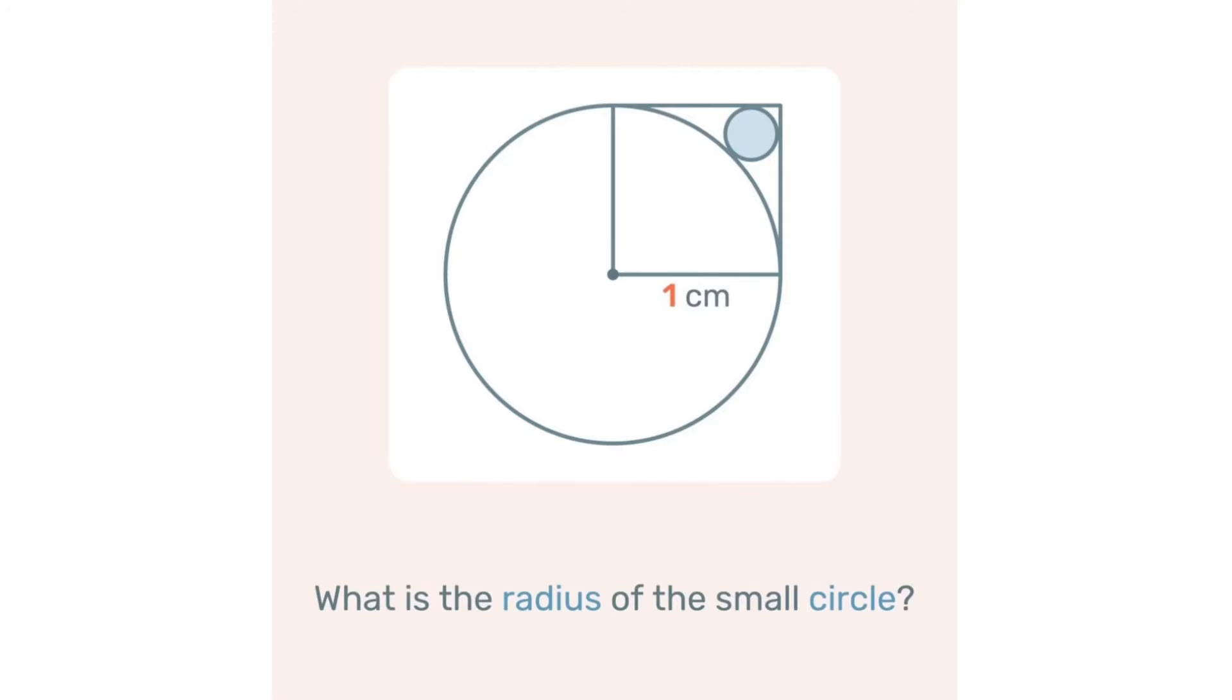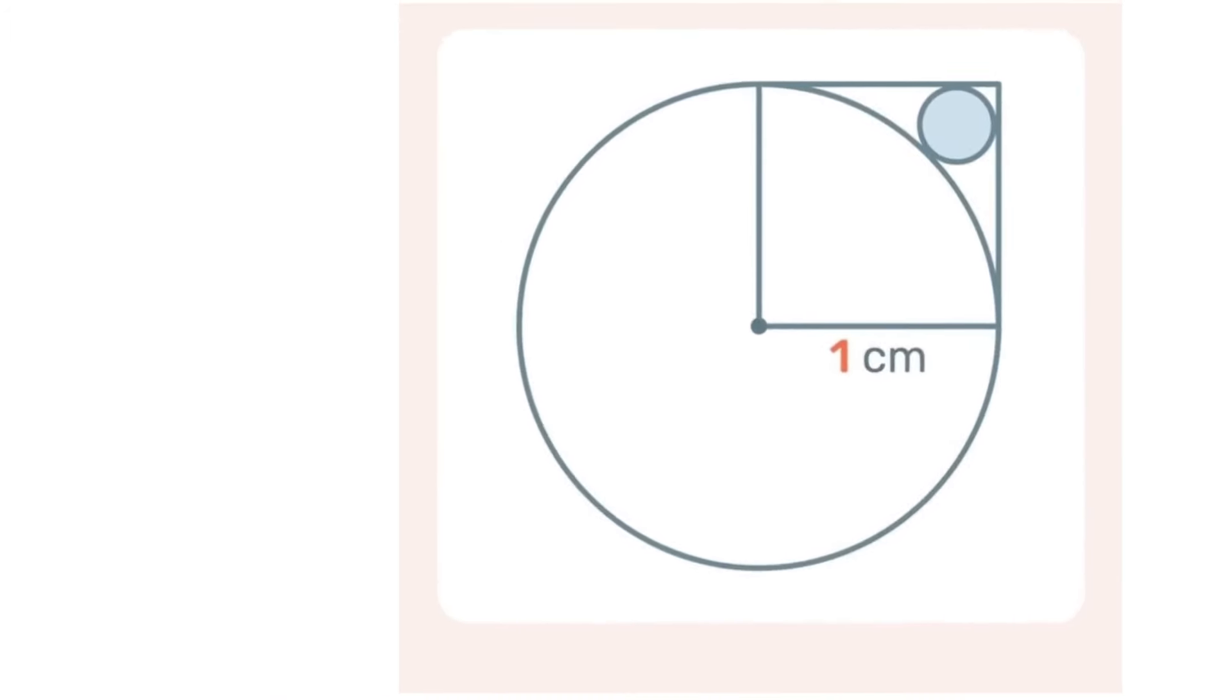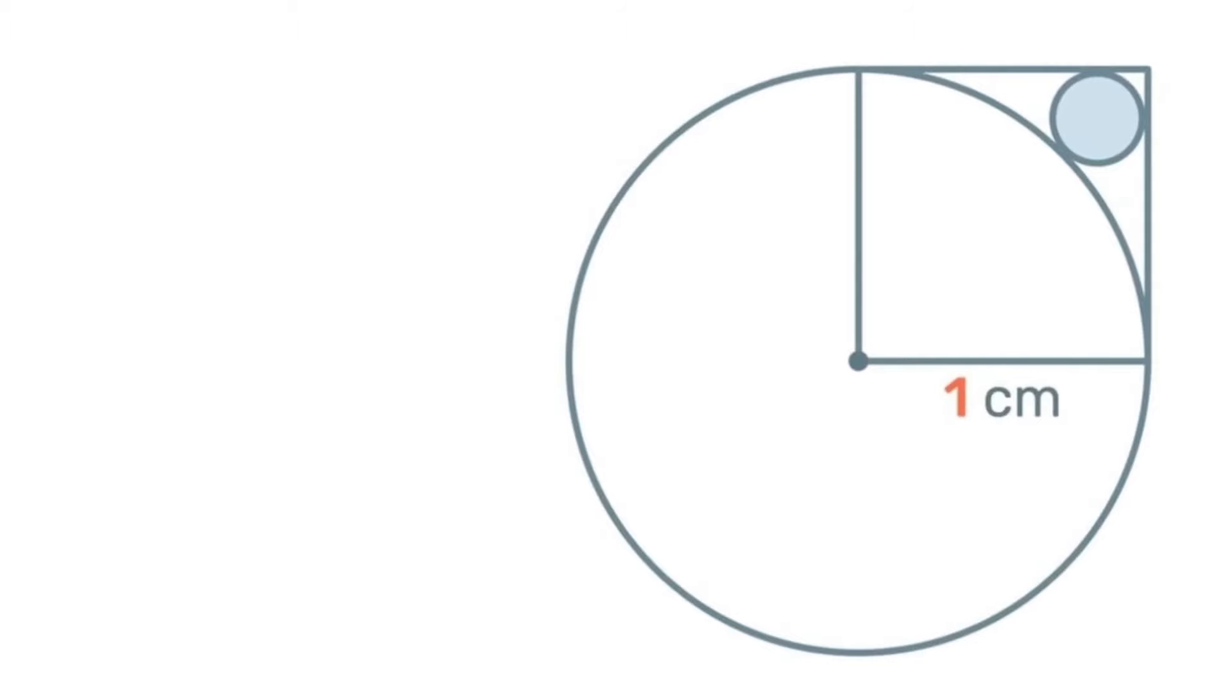Pause the video here, give it a try, see what you can come up with. I'm gonna solve it this way. So first off we can see that that is a square, so if that side is one centimeter then that side is also one centimeter.